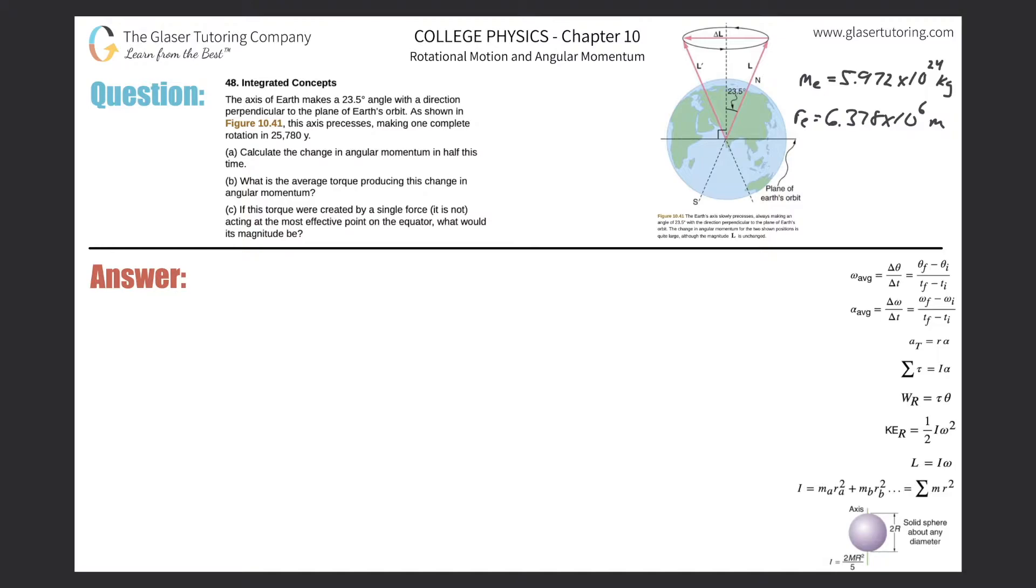Number 48, integrated concepts. The axis of Earth makes a 23.5 degree angle with a direction perpendicular to the plane of Earth's orbit. As shown in figure 10.41, this axis precesses, making one complete rotation in 25,780 years. Letter A, calculate the change in angular momentum in half this time.